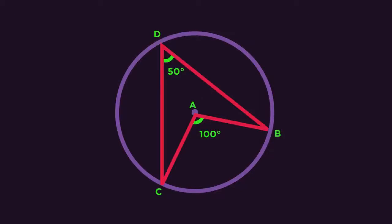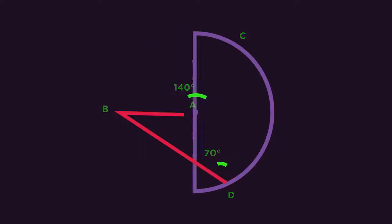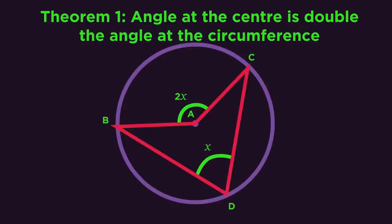Here's the first one. What's the connection between the two angles? Hopefully you can see that the angle at the centre is double the angle at the circumference. That's the first theorem.